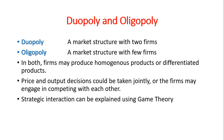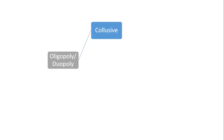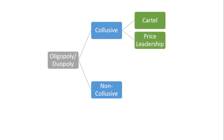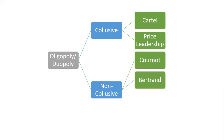The models of Duopoly or Oligopoly can be broadly classified into two categories: collusive models and non-collusive models. Collusive models are those in which firms cooperate with each other and take price and output decisions jointly. This category includes cartels and price leadership models. Whereas the category of non-collusive models includes models in which firms compete with each other, such as the Cournot model, Bertrand model, Kinked Demand Curve model, or Stackelberg model.